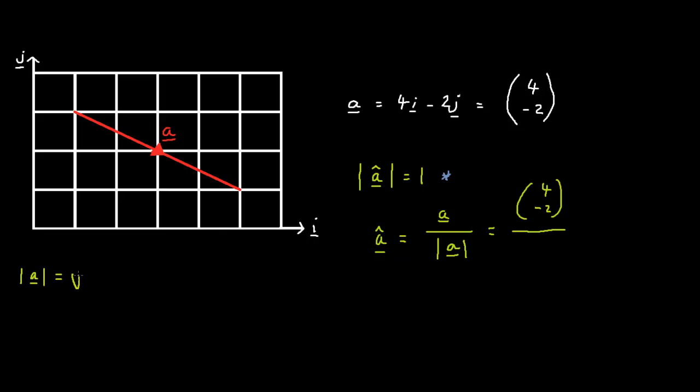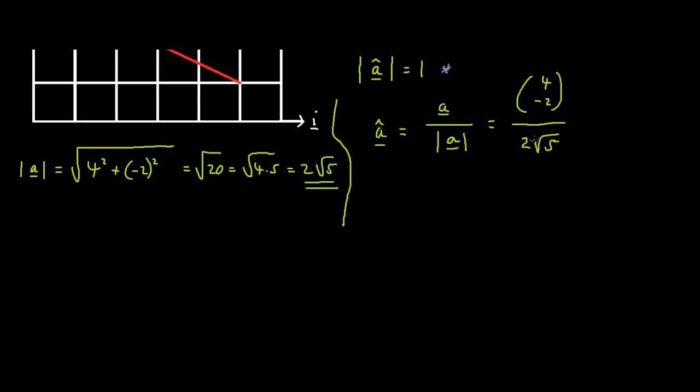which equals root 4 squared plus minus 2 squared, which equals root 20, which equals root 4 times 5, which equals 2 multiplied by root 5. We'll put 2 multiplied by root 5 over here. If we continue working on this equation,